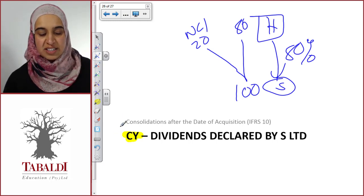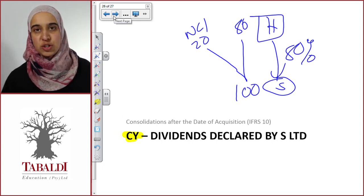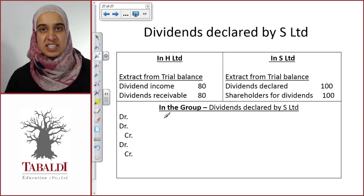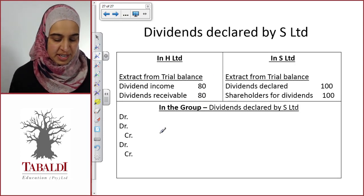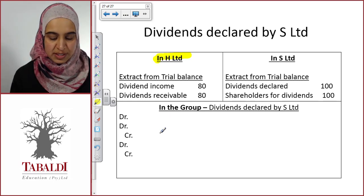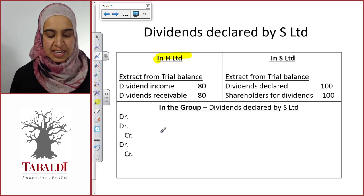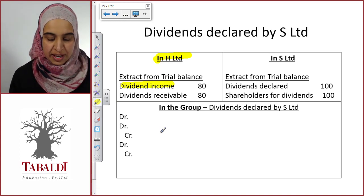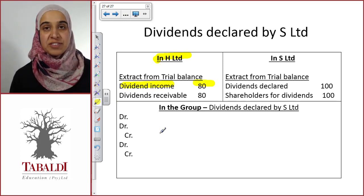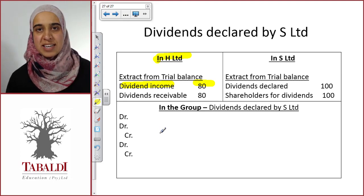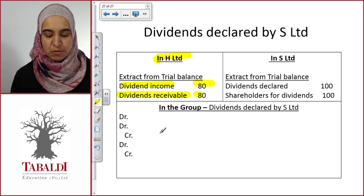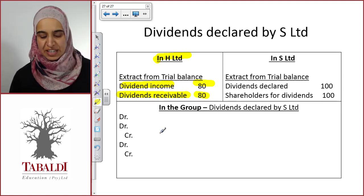How does this look in the individual financial statements, and what do we need to do on consolidation? In the individual financial statements, if these dividends have not yet been paid, H Limited will show dividend income of 80 sitting in profit or loss, and a dividend receivable of 80 within their statement of financial position, because this hasn't been paid yet from S to H.